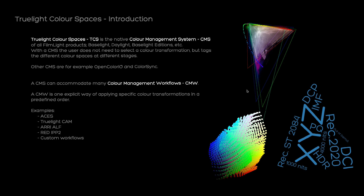Other color management systems are, for example, OCIO (OpenColorIO) or Apple ColorSync. A color management system can accommodate many different color management workflows — specific sets of rules and color transforms applied in a predefined order. Probably the most popular is ACES. Other workflows include TrueLightCam, ARRI ALF2 and 4, Red IPP2, the Cineon workflow, or custom workflows. TrueLight Color Spaces is not restricted to the TrueLightCam workflow; it can accommodate all of these workflows.